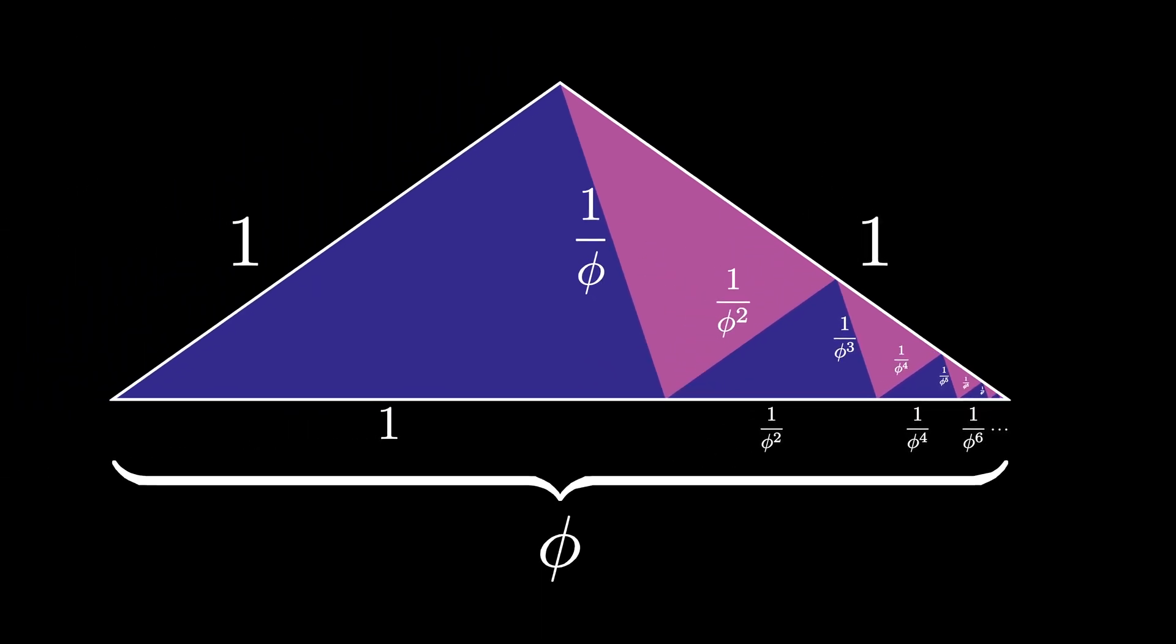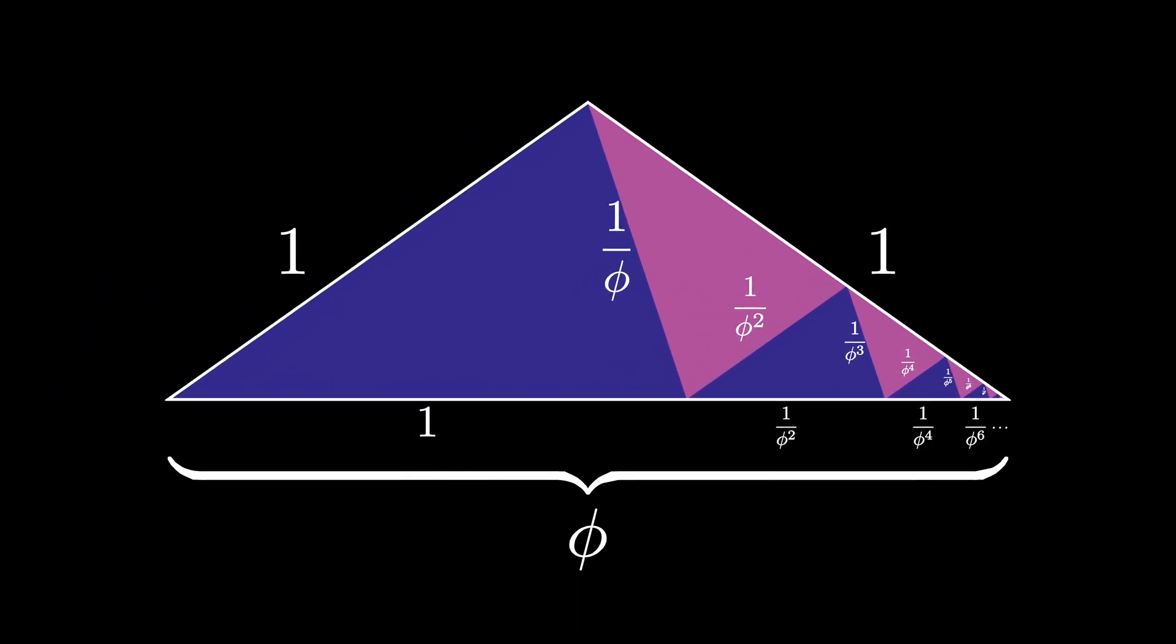But then we can compute the length of the long side of the golden gnomon triangle two different ways. We know that on the one hand, it is given by the golden ratio.